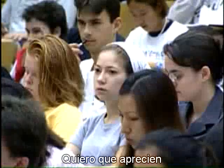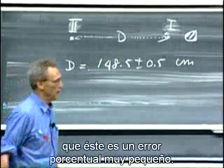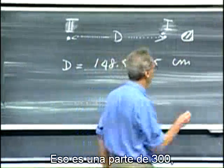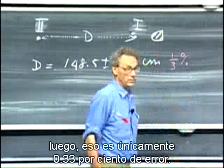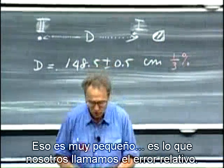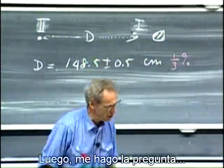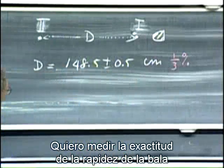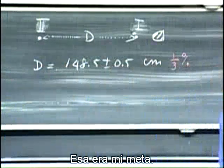I want you to appreciate that this is a very small percentage error. This is only five parts out of 1,500 — that is one out of 300, so that is only a one-third percent error. That's very small; that's what we call the relative error. Then I asked myself: I want to measure the accuracy of the speed of the bullet to about 2 percent. That was my goal. How accurate should I do the timing?